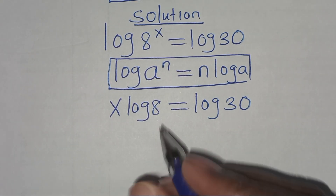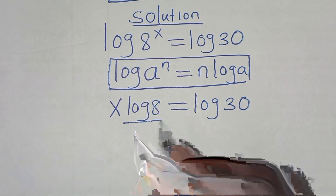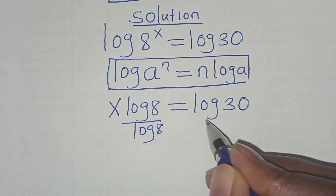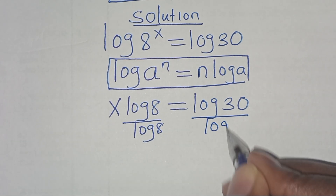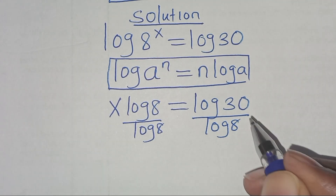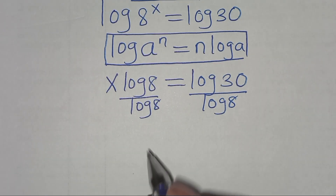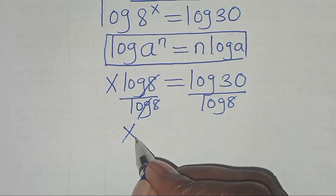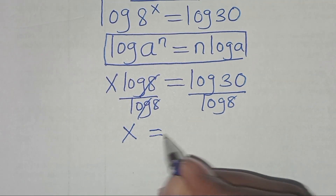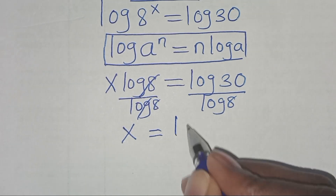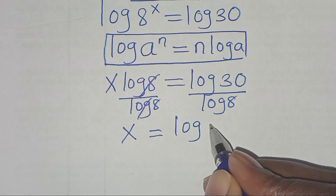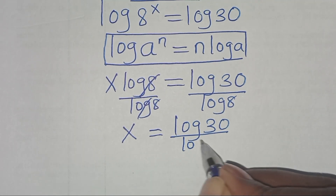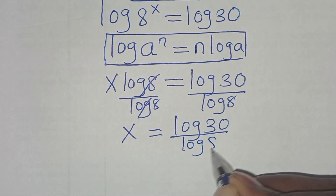The next step is to divide log 8 on both sides, so that x is equal to log 30 over log 8.